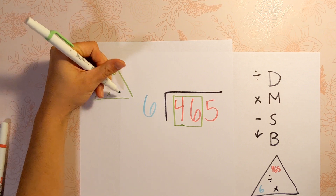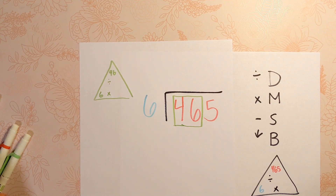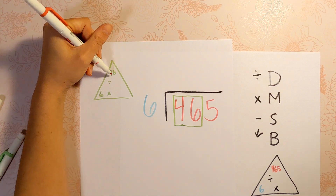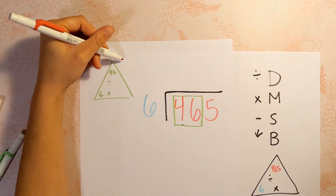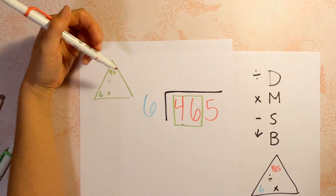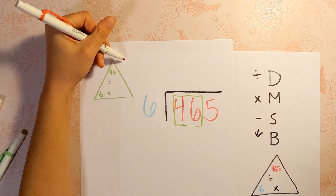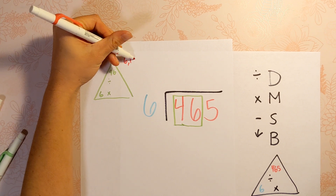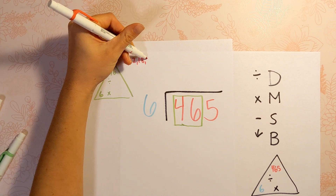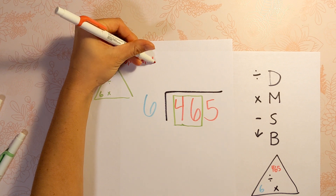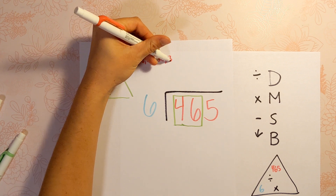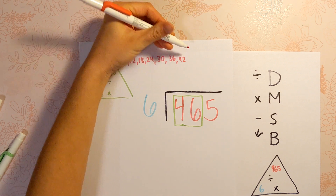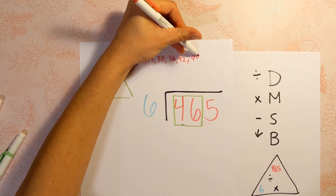In other words, 6 times what equals 46? Now 6 is not a factor of 46, so we won't hit it exactly. But can we get close? Skip counting by 6: 6, 12, 18, 24, 30, 36, 42, 48. We can't go over 46, so we stop at 42.